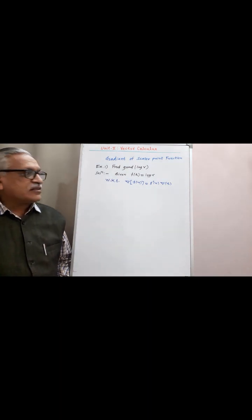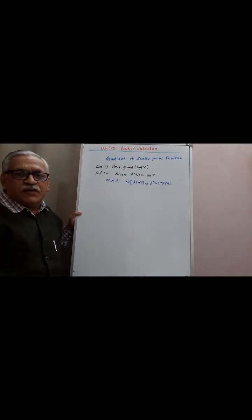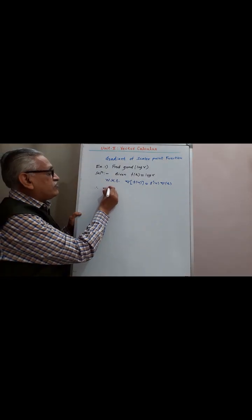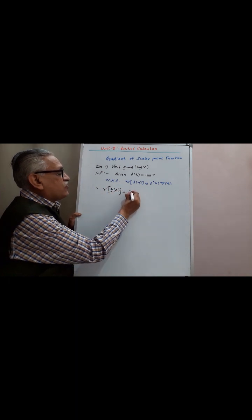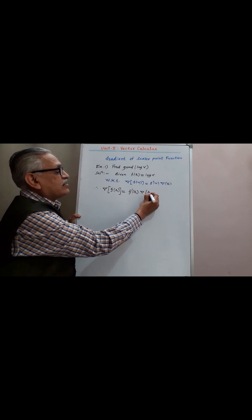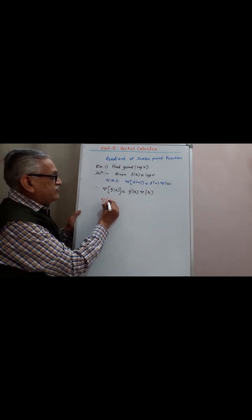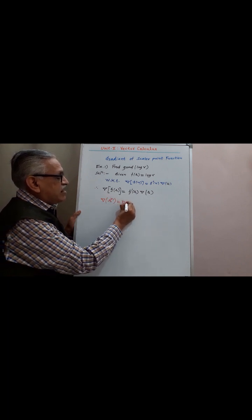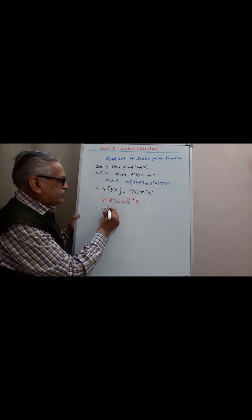Find the gradient of log(r). Using the formula: gradient of f(u) = f'(u) · ∇r, we have gradient of f(r) = f'(r) · ∇r. The result for ∇(r^n) is n · r^(n-2) · r̄.